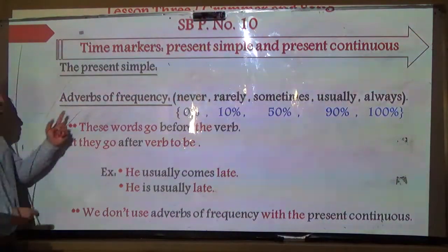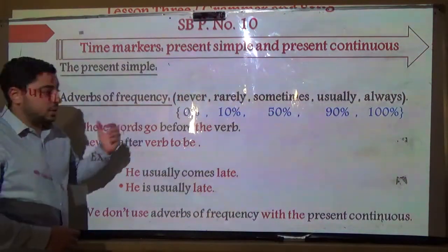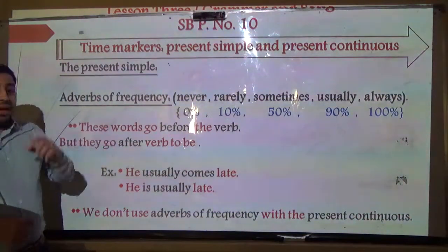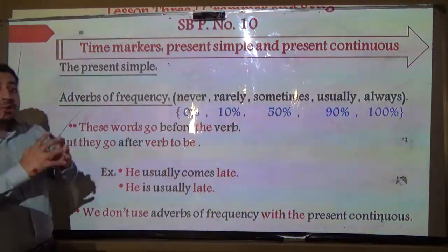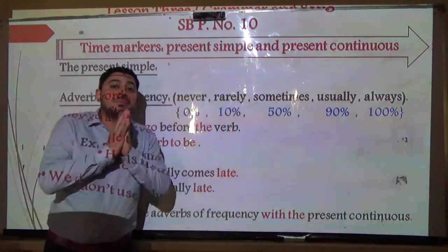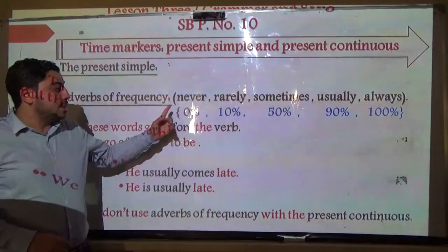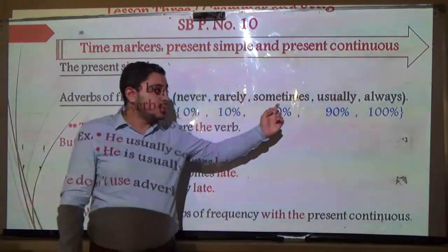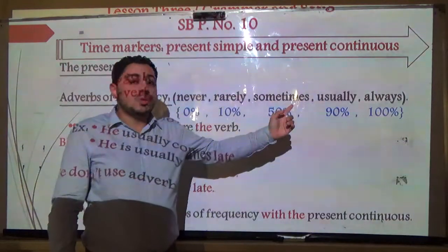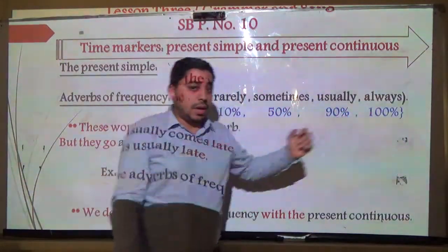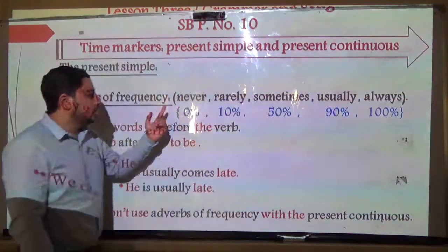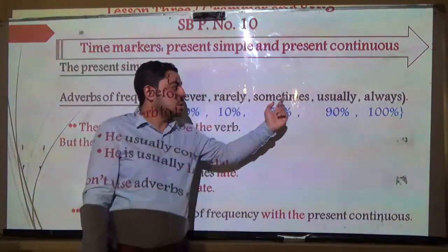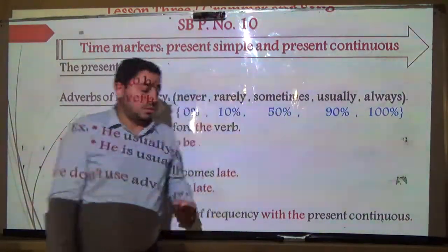Let's know the time markers of the present simple — the adverbs of frequency. We have five: never, rarely, sometimes, usually, and always.